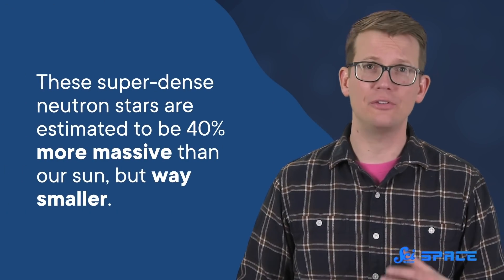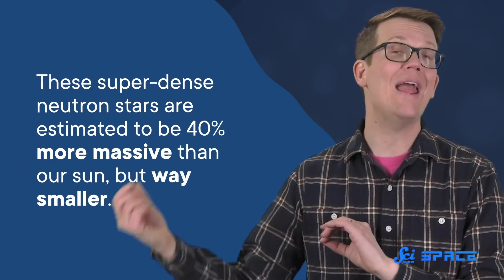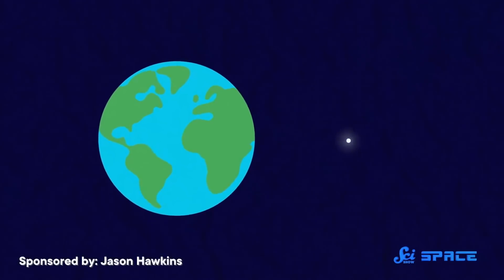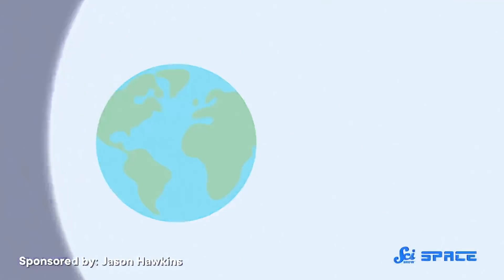Now, these super-dense neutron stars are estimated to be 40% more massive than our Sun, but way smaller. And given the error bars in this recent lead experiment, this could still be an accurate estimation for neutron star size. But the results from the lead experiment suggest that neutron stars could also be way bigger than we thought. The difference of only a few quadrillionths of an inch in the neutron skin could be a huge deal scaled up to the astrophysics level.